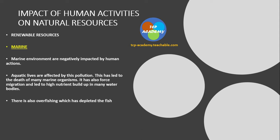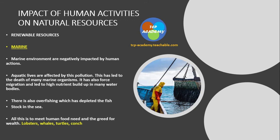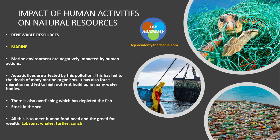There is also overfishing, which has depleted fish stock in the sea at an alarming rate. All this is to meet human food needs and the greed for wealth. Organisms affected include lobsters, whales, turtles, and conch. These pictures from our marine environment tell the gripping story of human impact on the marine ecosystem.